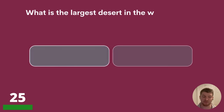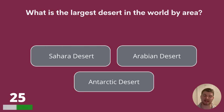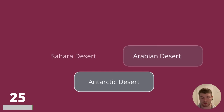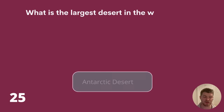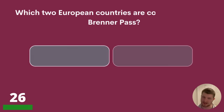Question 25. What is the largest desert in the world by area? Sahara Desert, Arabian Desert or Antarctic Desert? The answer to question 25 is Antarctic, and that question marks us being a quarter of the way through the quiz.